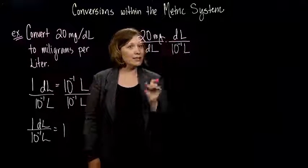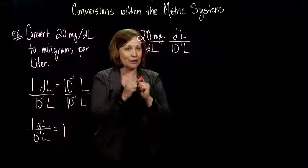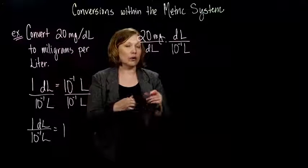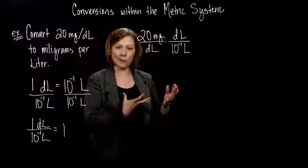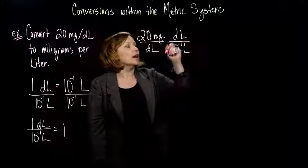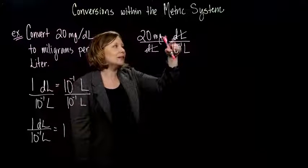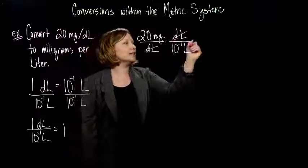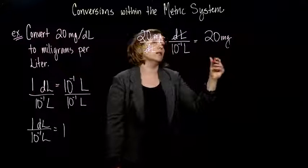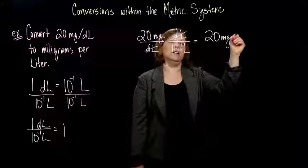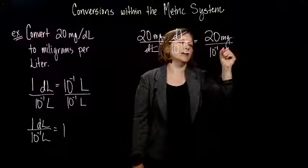Now, notice this deciliter, this D and the L, they're together because they're telling you about that unit of measure. So, don't forget that when you're working with these. That's how these are a little bit different from algebra. It's pretty much the only way in which they're different. So, at least in how we treat them. So, deciliters cancel with deciliters. And I have 20 milligrams over 10 to the minus 1 liters.